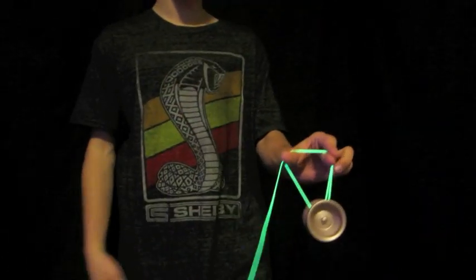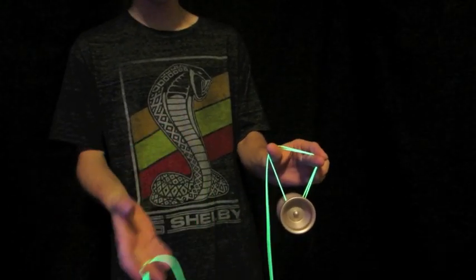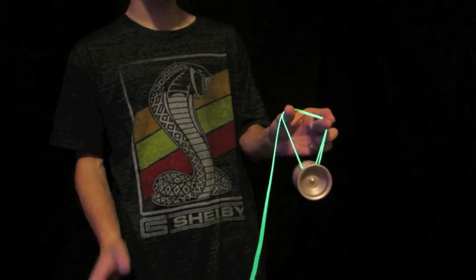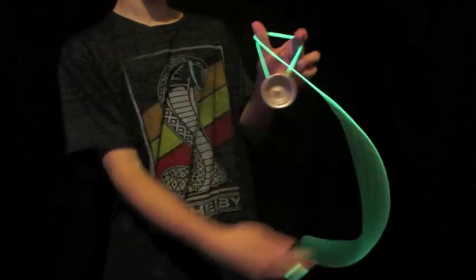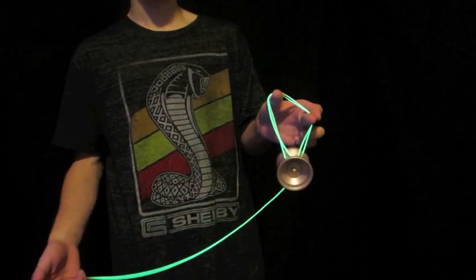So once you're here, once you have the finger pinching the other one, this is the one part that's a little bit tricky, I'd say. You're just basically going to take this string and whip it around the yo-yo and onto the yo-yo itself.